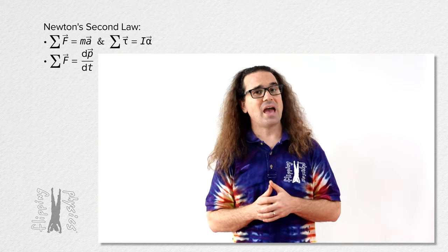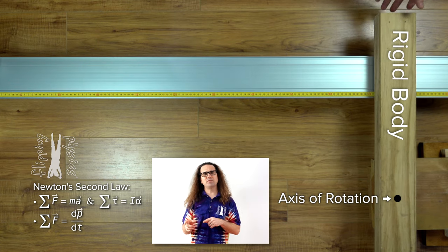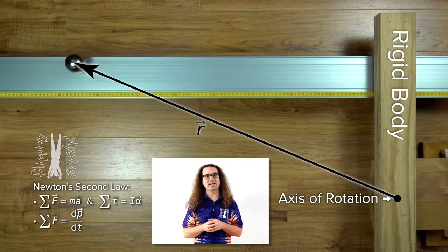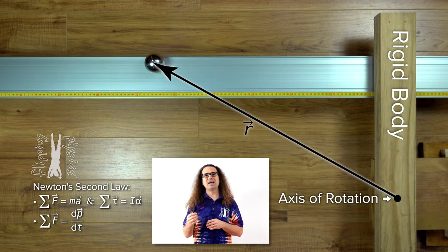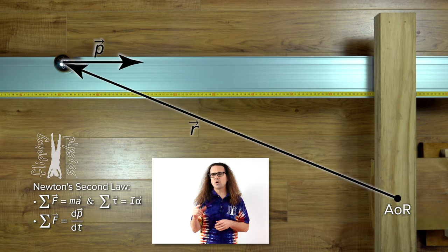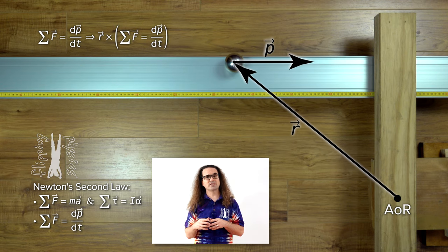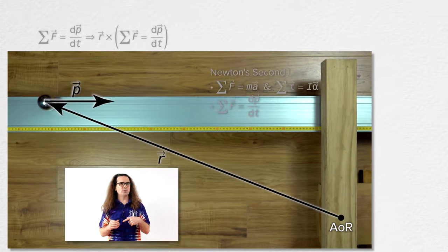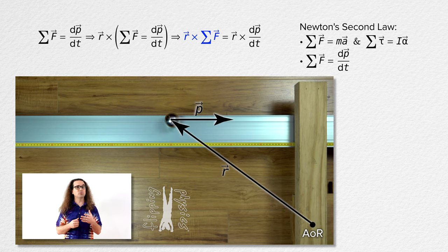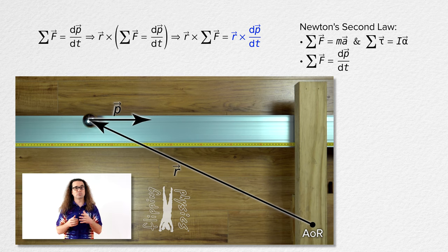Now let's say we have a rigid body with an axis of rotation. And let's have a ball moving toward that rigid body. The ball has r, a position vector relative to that axis of rotation, and the ball has linear momentum, p. Going back to the momentum version of Newton's second law, let's take the cross product of the position vector with that whole equation. That gives us the cross product of the ball's position vector and the net force acting on the ball, equal to the cross product of the ball's position vector and the derivative of the linear momentum of the ball with respect to time.